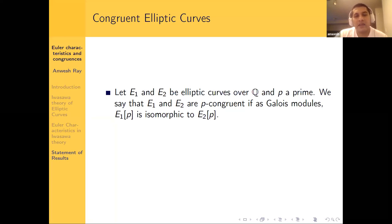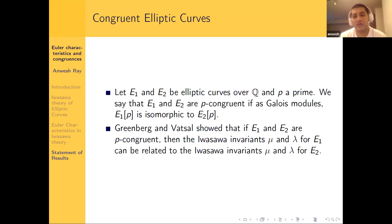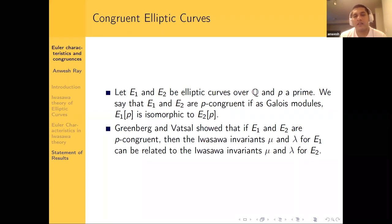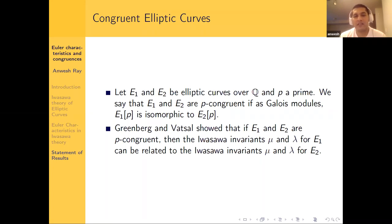The idea is that if we have two elliptic curves which are p-congruent, we expect the Iwasawa invariants of E1 to be related to those of E2. These investigations were first carried out by Greenberg and Vatsal. They showed that two p-congruent elliptic curves with some additional properties have related Iwasawa invariants μ and λ: specifically, if μ = 0 for E1, then μ = 0 for E2, and there are also results for λ.